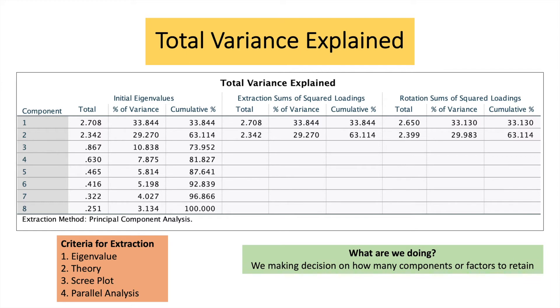A general rule of thumb that is used in order for us to say whether the total variance explained is sufficient or not, we have to make sure that the total variance explained should be at least 50%. So I've explained to you the first criteria, which is eigenvalue.